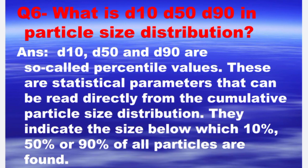Next is: what is D10, D50, D90 in particle size distribution? The answer is, D10, D50, and D90 are so-called percentile values. These are statistical parameters that can be read directly from the cumulative particle size distribution. They indicate the size below which 10%, 50%, or 90% of all particles are found.